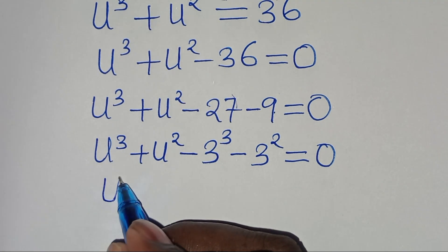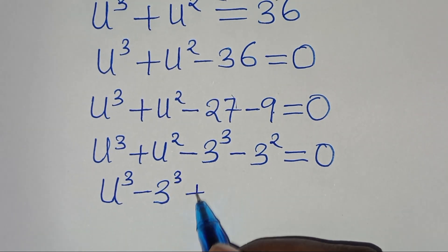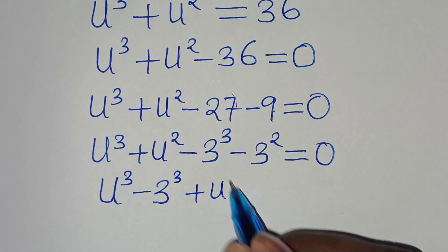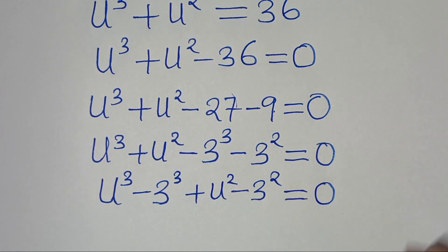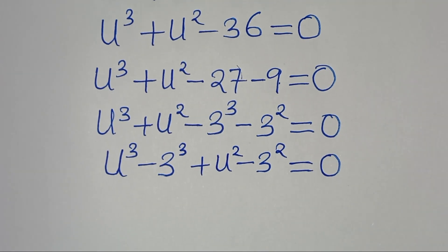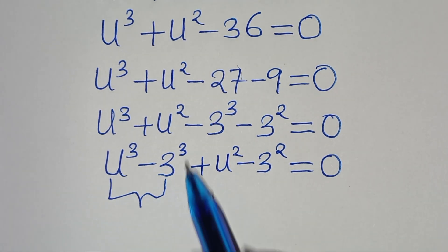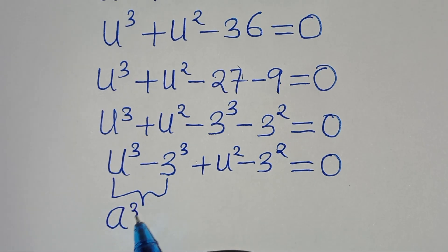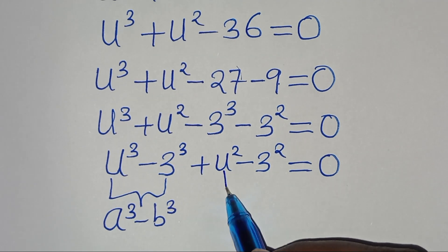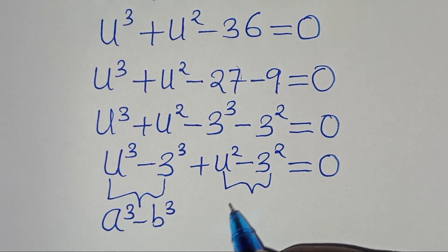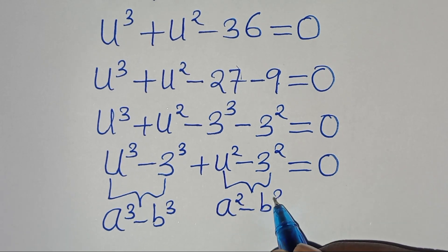So we can write this as u to the power of 3 minus 3 to the power of 3, then plus u to the power of 2 subtract 3 to the power of 2, this is equal to 0. We have got 2 parts here. The first part is the difference of 2 cubes expressed as a to the power of 3 minus b to the power of 3. And the second part is the difference of two perfect squares expressed as a squared minus b squared.